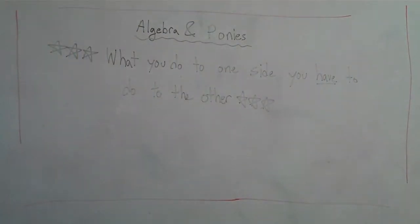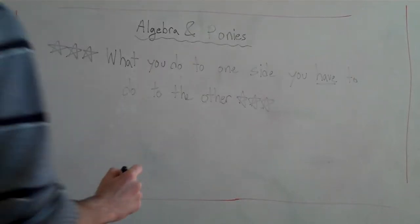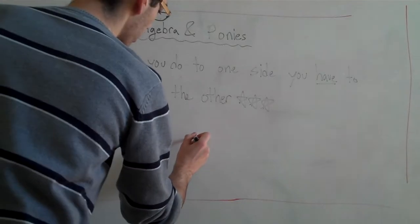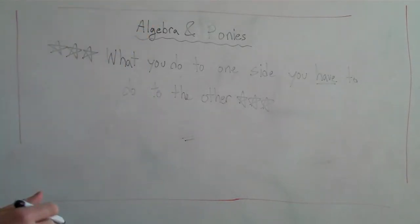The most important rule, in my opinion in algebra, is: what you do to one side, you have to do to the other side. Do you know why? Because there's this thing in the middle of an equation — it looks like this. An equals sign. What does an equals sign mean?